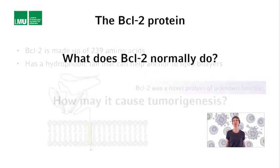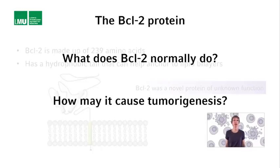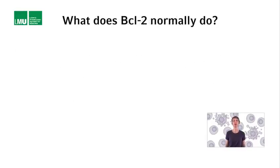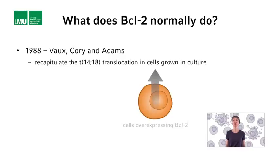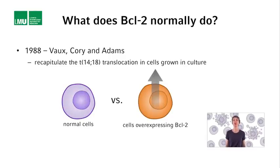The two important questions to ask were: what does the BCL2 protein normally do, and how may it cause tumorigenesis? Vaux, Cory, and Adams, three investigators at the Walter and Eliza Hall Institute of Medical Research in Melbourne, Australia, thought that one approach to answer these questions was to recapitulate in cells grown in culture what happens in cells harboring the T1418 translocation. Using mammalian cells grown in culture, they generated cell lines in which the BCL2 gene could be overexpressed with the help of a viral promoter, and then analyzed cells from these lines with and without BCL2 overexpression.